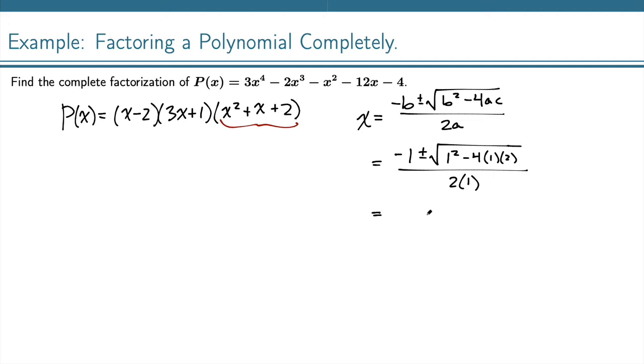And this gives me -1 ± √(-7) over 2. And this negative now I can essentially pull that out and turn it into an i, -1 ± i√7 over 2.